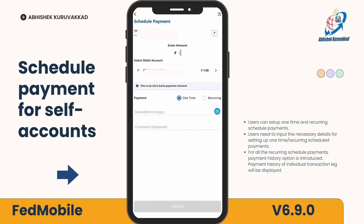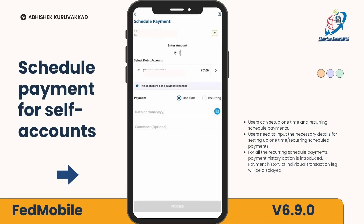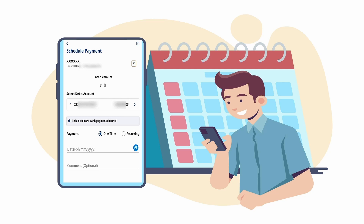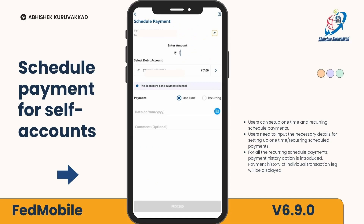One new feature is schedule payment to self account. In Fedmobile, previously it was not possible to schedule a payment to your own bank account. Now you will be able to schedule monthly or annual payments to your own accounts at any particular frequency. Let's look at the details of that feature.